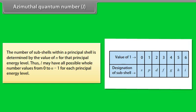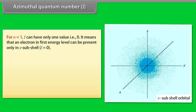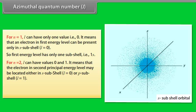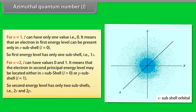L may have all possible whole number values from 0 to N−1 for each principal energy level. For N equals 1, L can have only one value: 0 — meaning an electron in the first energy level can be present only in the S subshell (L=0), so the first energy level has only one subshell: 1S. For N equals 2, L can have values 0 and 1 — the electron may be in the S subshell (L=0) or P subshell (L=1), so the second energy level has two subshells: 2S and 2P.